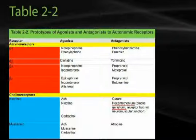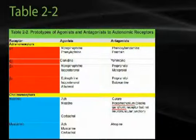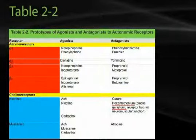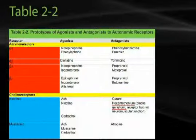At cholinoreceptors, we have a different series of drugs. Acetylcholine, nicotine, and carbachol all act as nicotinic agonists, whereas curare and hexamethonium act as nicotinic antagonists. Hexamethonium is notable for only being able to block the nicotinic receptor at the ganglia, but not at the neuromuscular junction. Muscarinic antagonists include atropine, and agonists include acetylcholine, muscarine, and carbachol, which is a broad-spectrum cholinergic agonist.